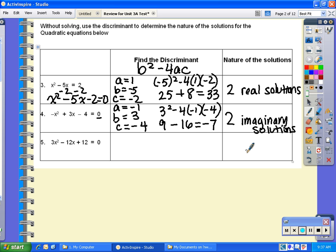For number five, again already equal to zero, so I'm going to evaluate for a, b, and c: a = 3, b = -12, and c = 12. Therefore I'm going to use b² - 4ac.